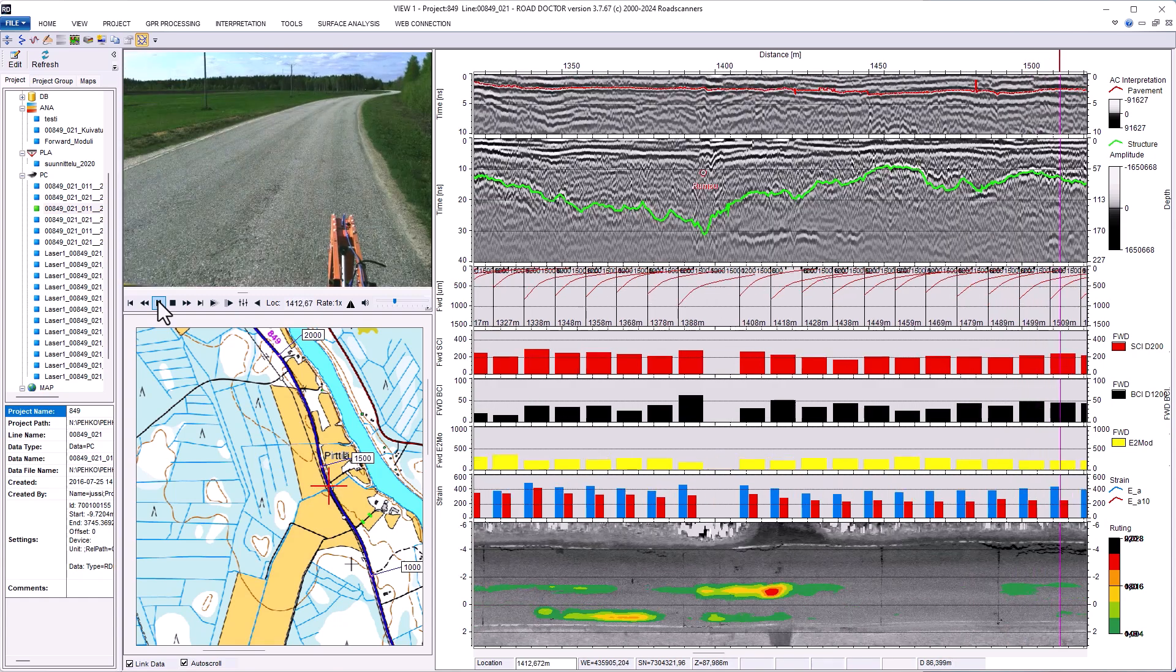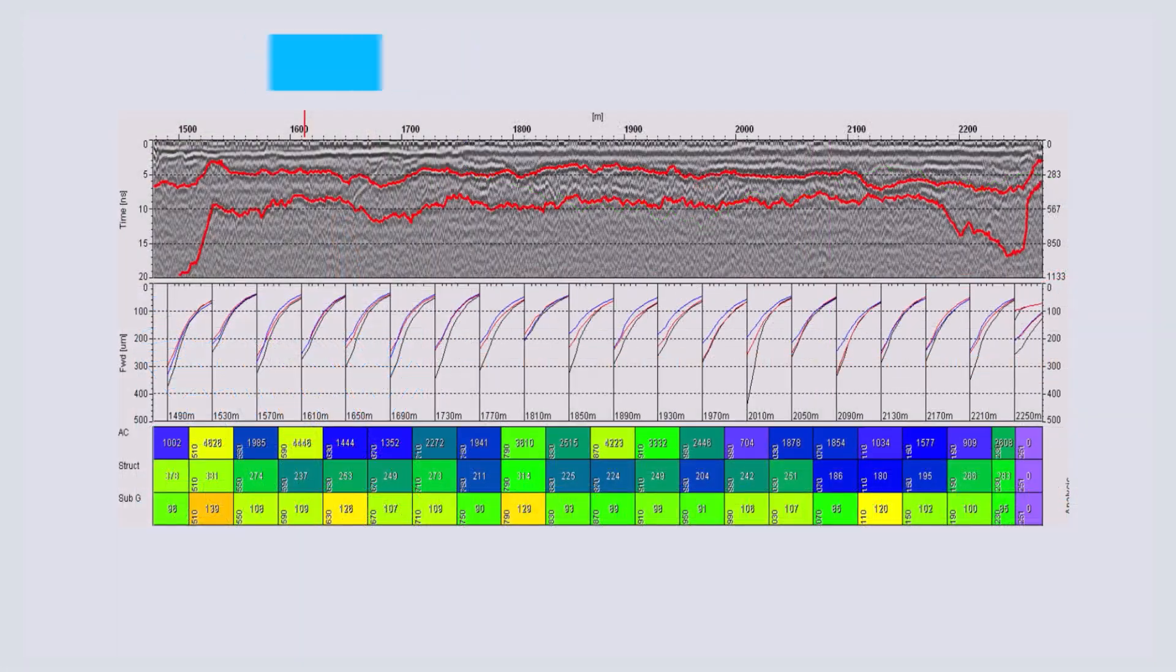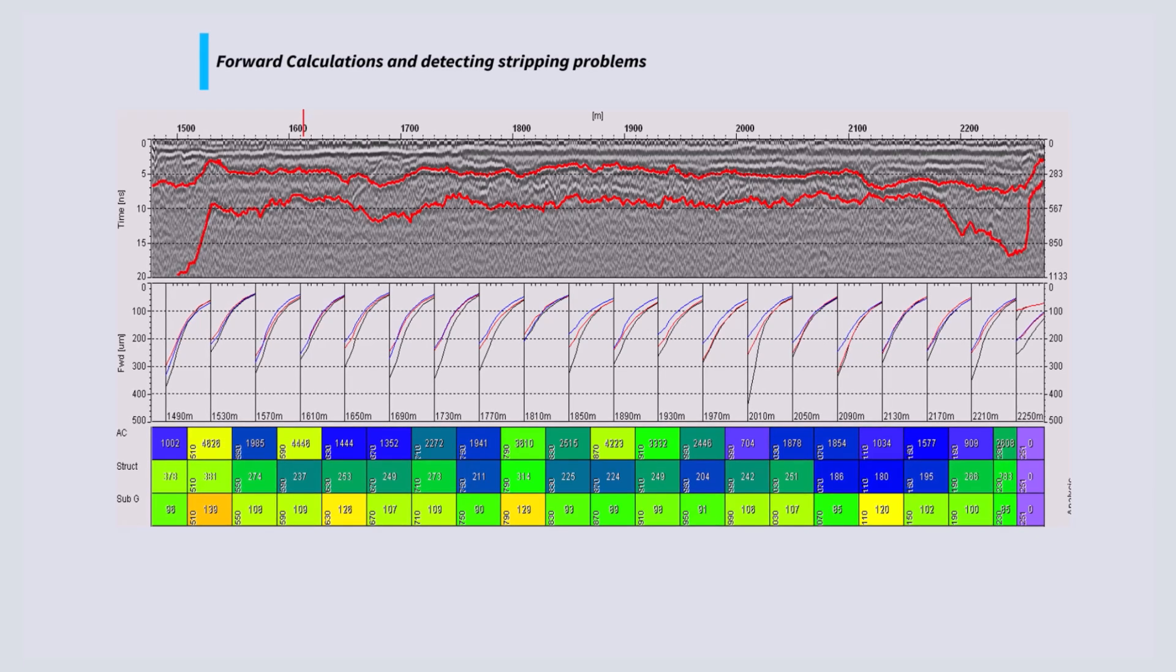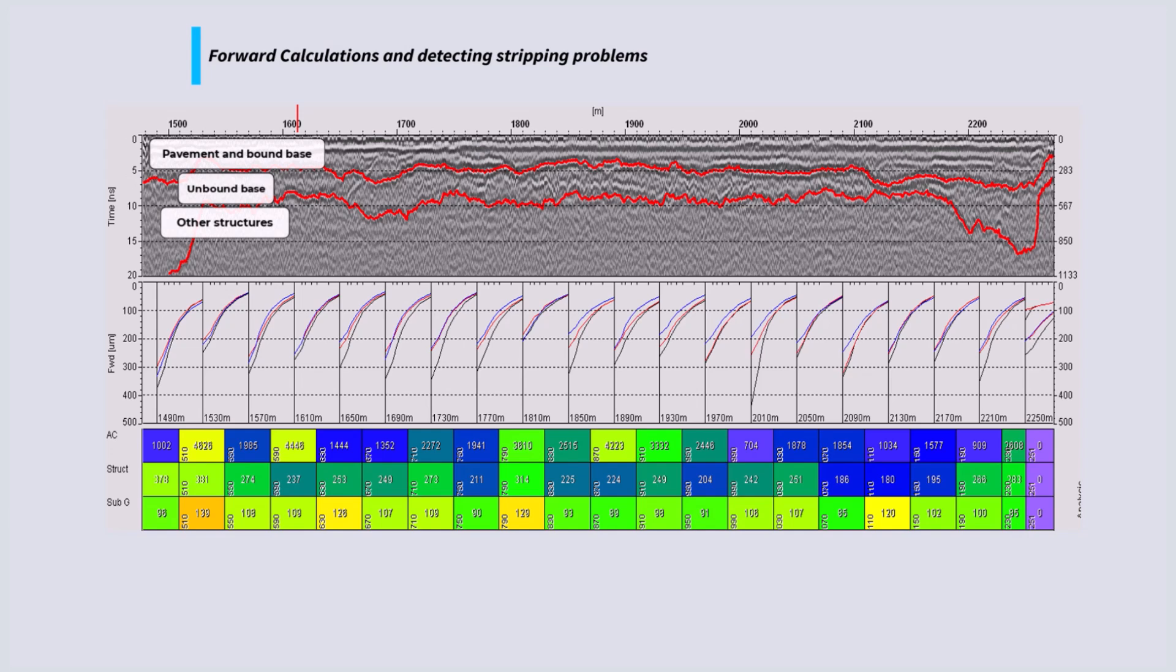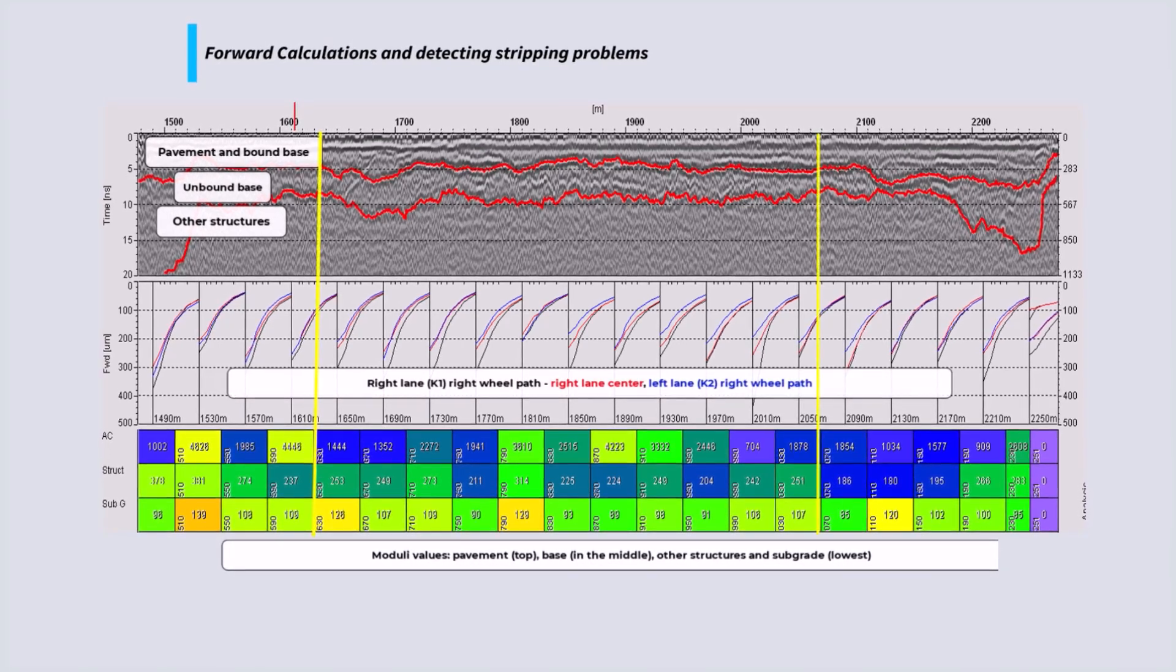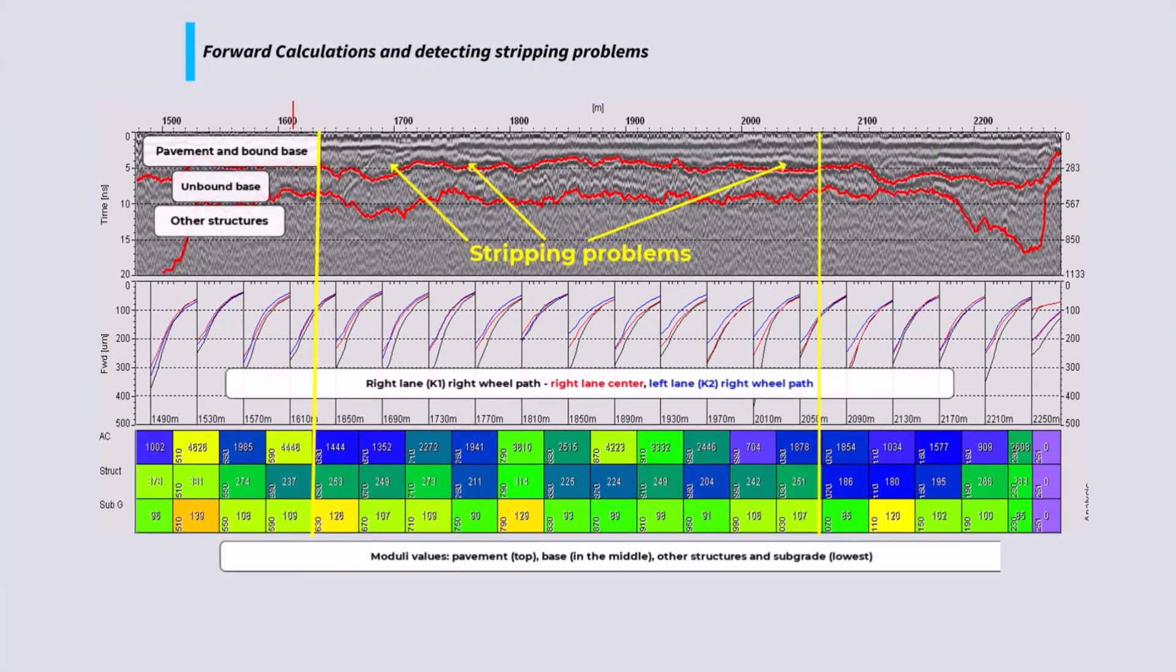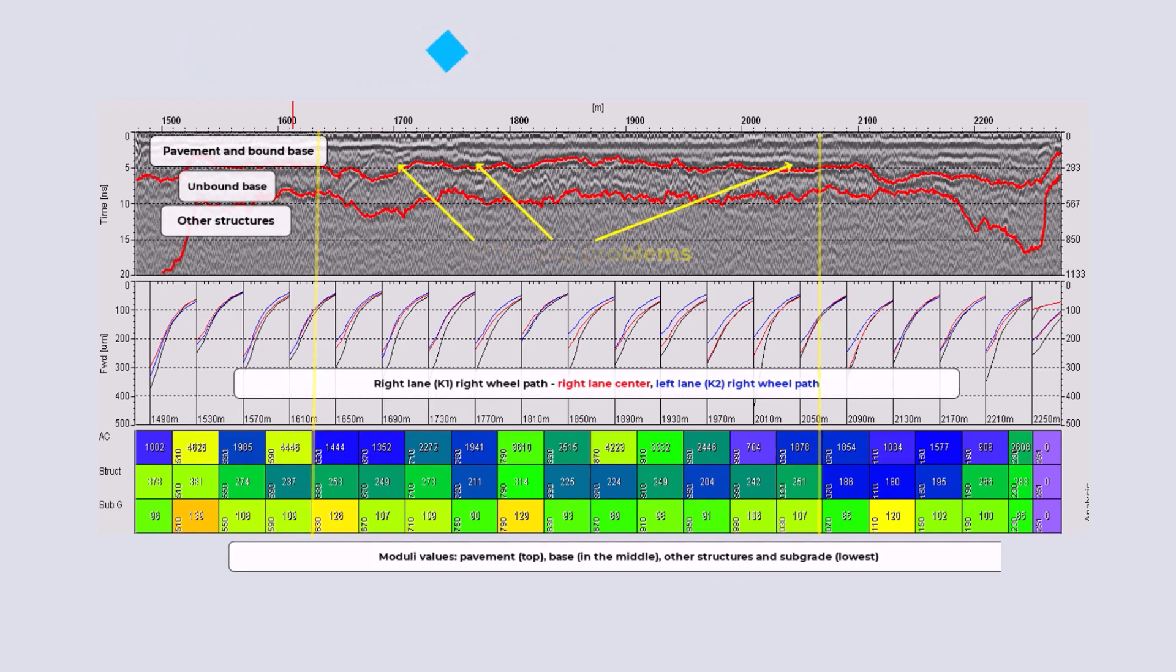RoadDoctor also has a built-in option for forward calculation of pavement structure and subgrade moduli values based on the deflection bowls and GPR thickness data. This FHWA-based analysis provides moduli values for the pavement structure needed for the design.